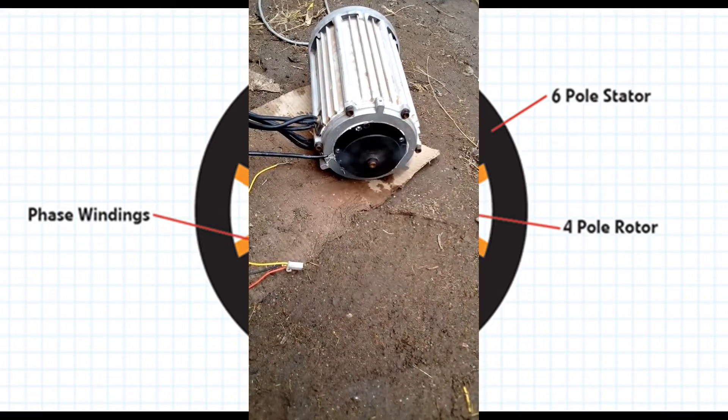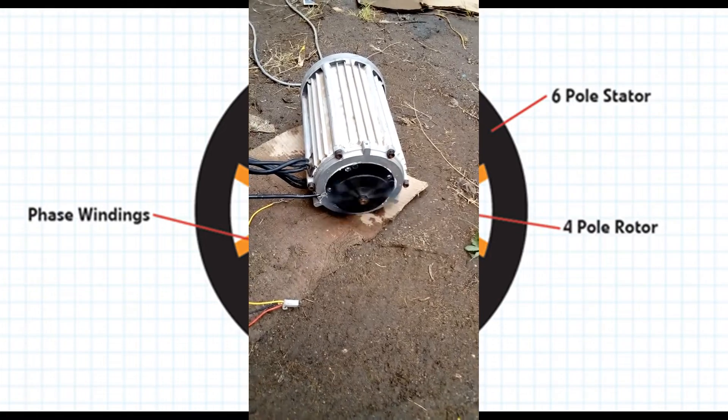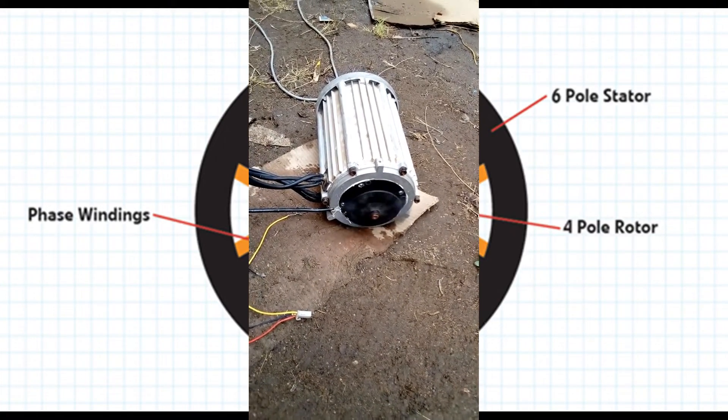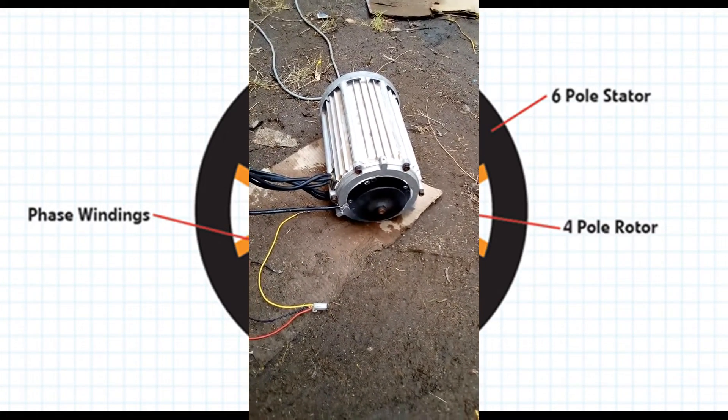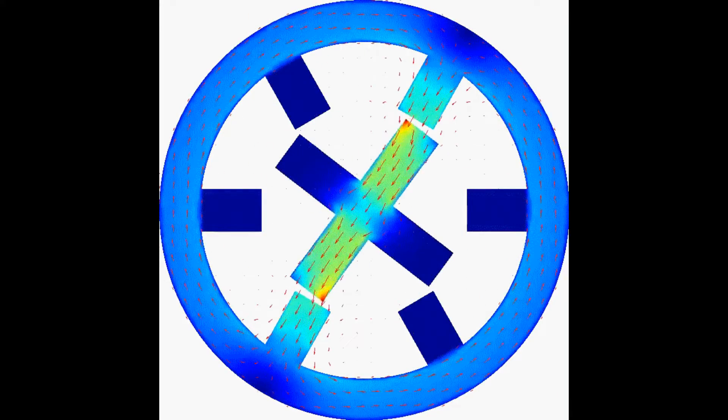The operation of reluctance motors is relatively simple. In order for the rotor to rotate, the magnetic resistance must change with the position. The magnetic resistance is also called reluctance, which is where the name reluctance motor comes from.